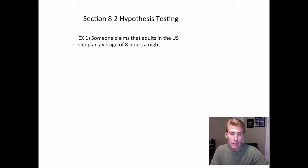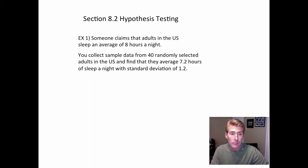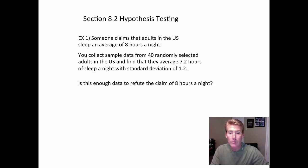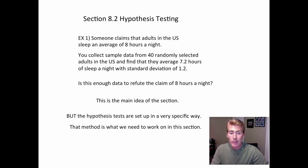So here's the overall idea. Somebody makes some kind of claim, like that adults average 8 hours of sleep a night. And then you want to prove them wrong. So you get a random sample and find out that the average is much lower — it's 7.2 with s equal to 1.2. The main question is: is this sample data from 40 people enough to prove that claim of 8 hours wrong? Or is it just not enough data? Do you need 400 people instead of 40? That's the main idea.